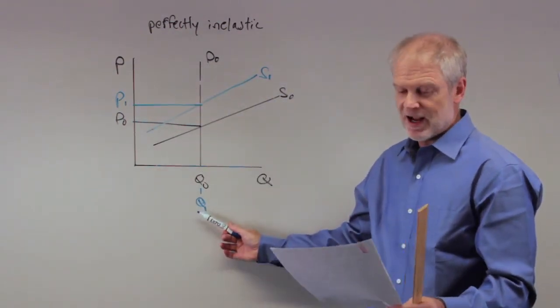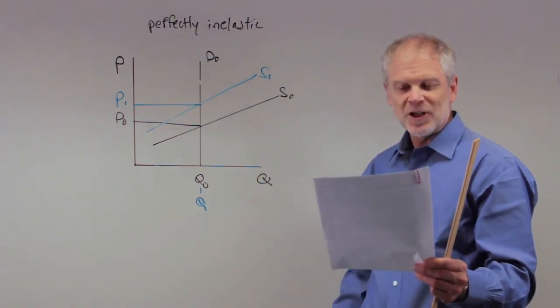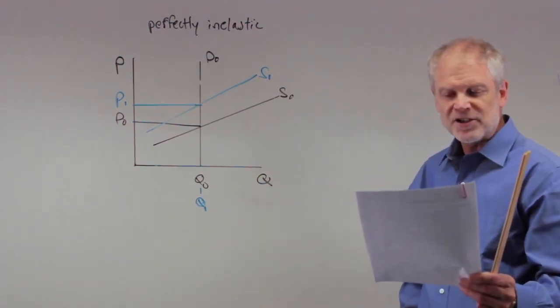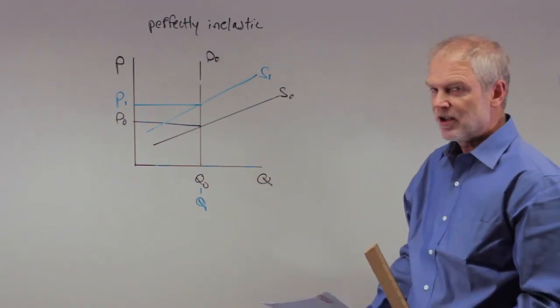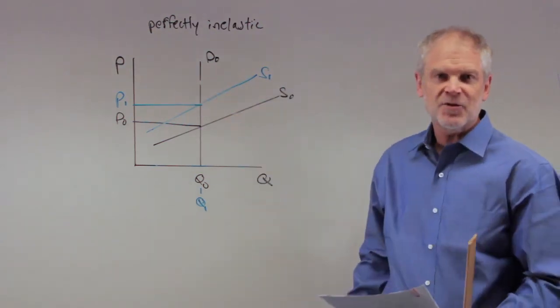C, the equilibrium quantity and the equilibrium price both unchanged. No, this is the original equilibrium, this is the new one. We've clearly experienced an increase in price so that is wrong.